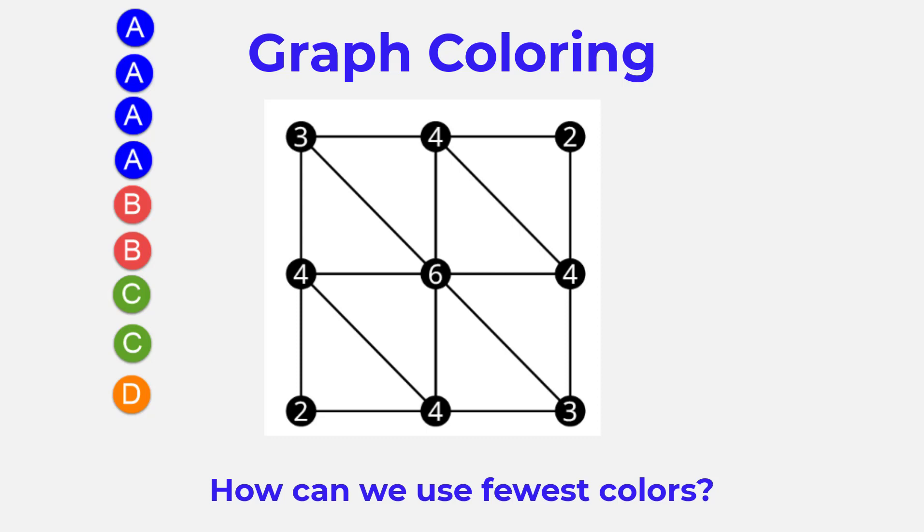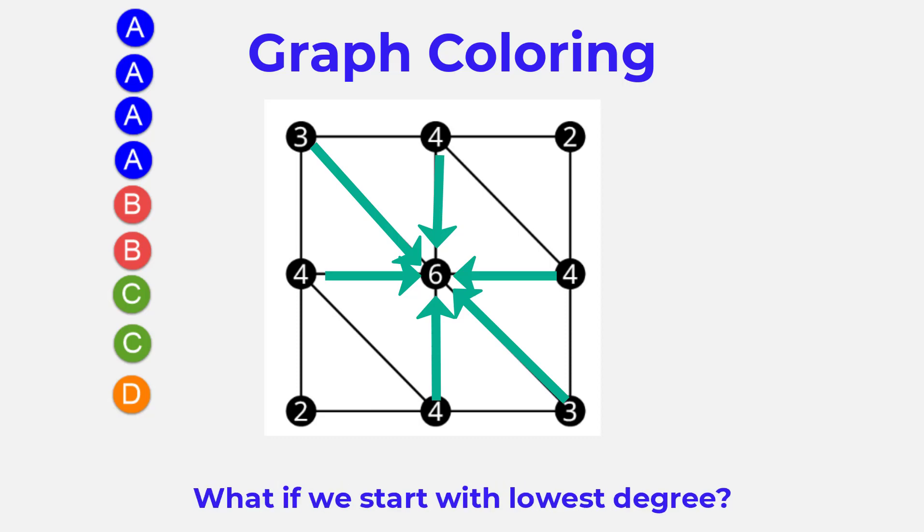For example, in this graph, the vertex right in the middle connects to six different edges. That is the greatest number of edges touching any single vertex, so that would be the vertex of highest degree. To understand why we would want to start with six, it's best to look at what would happen if we took a different approach.